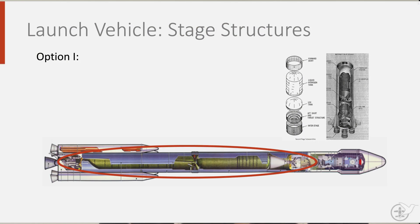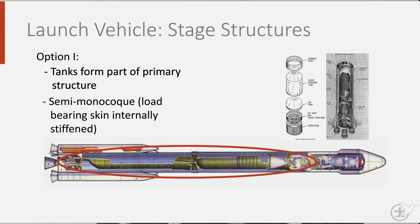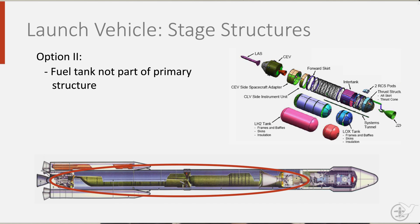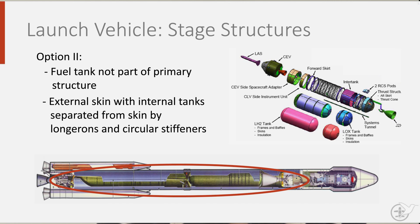There are two types of stage structures. One where fuel tanks are part of the primary load-carrying structure, such as the Saturn V rocket — these structures resemble a semi-monocoque structure with internal stiffness. The second option is a separate tank which is not part of the primary structure; there is an external skin with the internal tank separated from the skin by longerons and circular stiffeners. The infamous V2 rocket had such a structure.